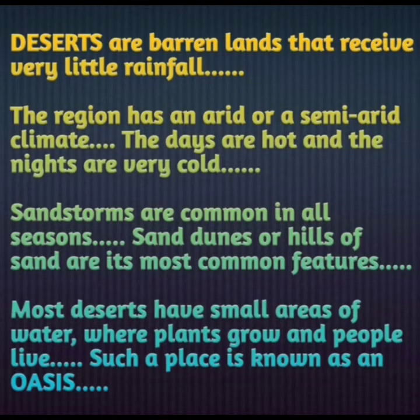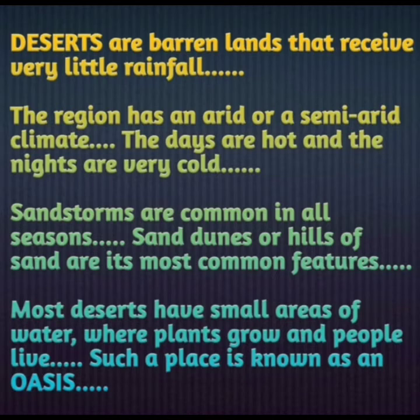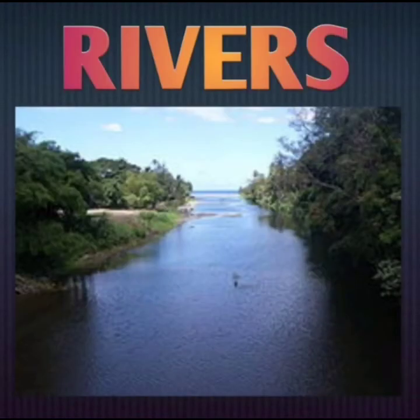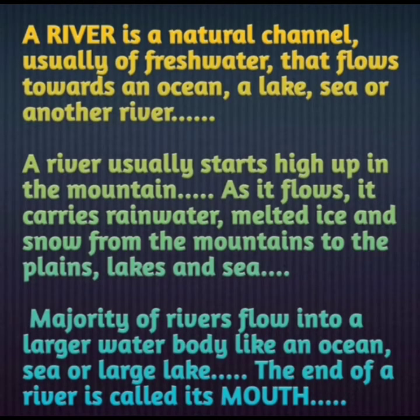Sand dunes — hills of sand — are the most common features of deserts. When sandstorms occur, these hills of sand shift from one place to another. Most deserts have small areas of water where plants grow and people live — such a place is known as an oasis. Caravans moving through deserts settle in these oasis areas.